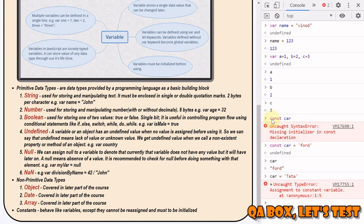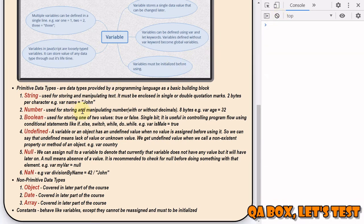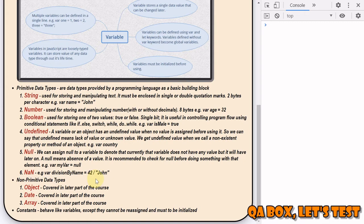Now let's briefly revisit data types - specifically primitive and non-primitive. Primitive data types are provided by the programming language as the basic building blocks. A primitive is data which is not an object and has no methods. An interesting thing is that all primitive types are immutable - they cannot be altered. Don't confuse this with a variable assigned a primitive value - the variable may be re-assigned a new value, but the existing value itself cannot be changed in the way that objects, arrays, and functions can.